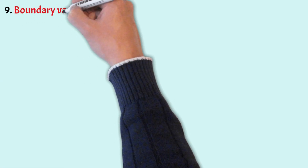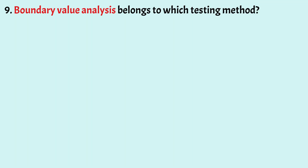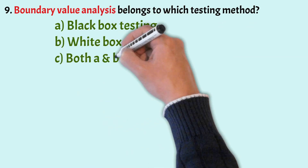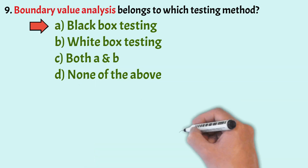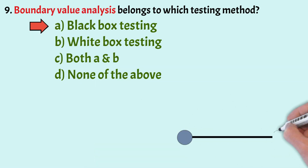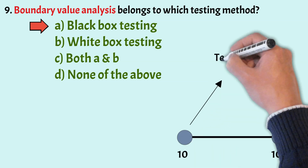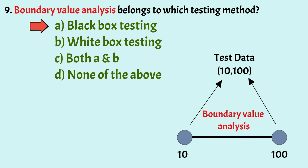Next: Boundary Value Analysis belongs to which testing method? Options: Black Box Testing, White Box Testing, Both A and B, and None of the above. The correct option is Option A, Black Box Testing. Boundary Value Analysis is a Black Box Testing technique used to test boundary values, as input values near the boundary have higher chances of yielding defects.